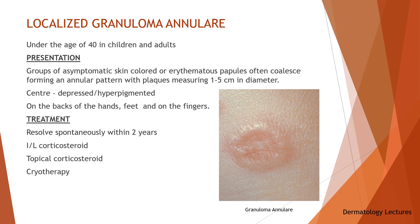Localized granuloma annulare is the most common form of granuloma annulare. It usually occurs in children and adults under the age of 40. Groups of asymptomatic skin-colored or erythematous papules often coalesce, forming an annular pattern with plaques measuring 1 to 5 cm in diameter. The center of the lesion can be depressed and slightly hyperpigmented. They often occur on the back of the hands, feet, and fingers. The majority of the papules resolve spontaneously within 2 years. If treatment is necessary, the choices are intralesional corticosteroids, topical corticosteroid under occlusion, or cryotherapy.